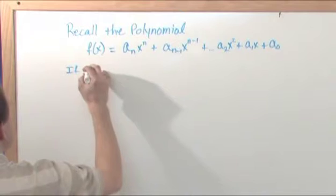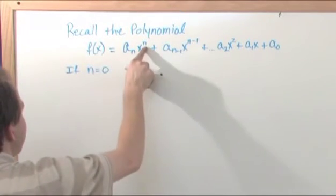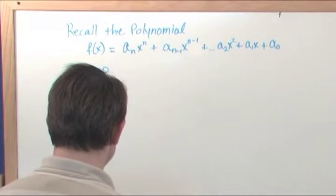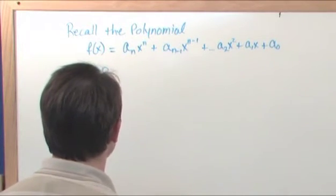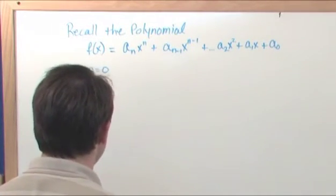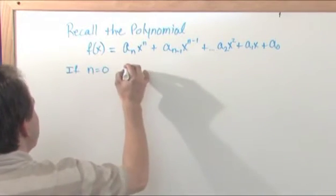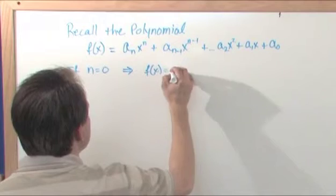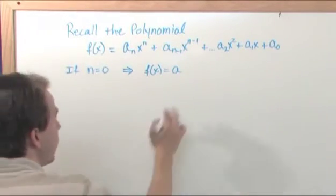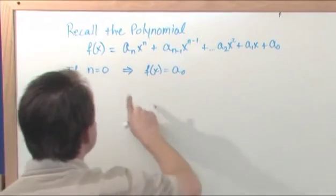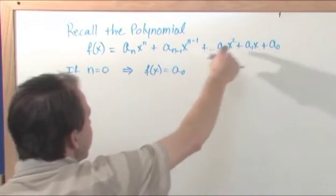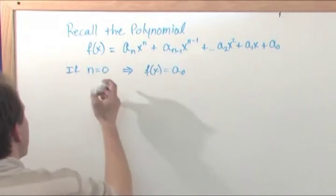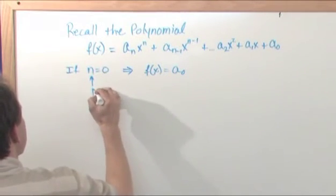If n is zero, so we have a degree zero here, so that basically means that the highest power in the thing is x to the zero power, then that means that f(x) is just simply equal to a naught here, because if n is equal to zero, then there are no powers of x at all up here, where n is the degree of the polynomial.